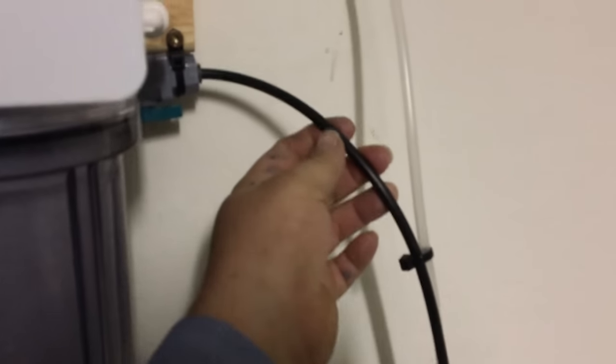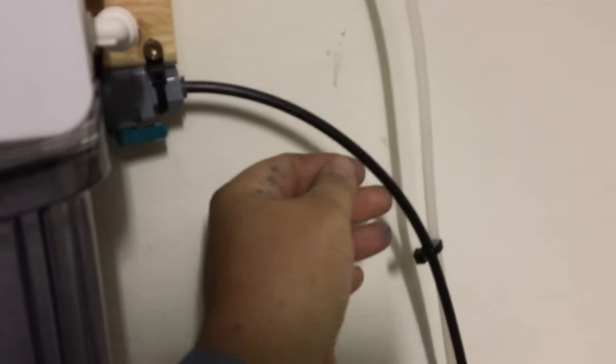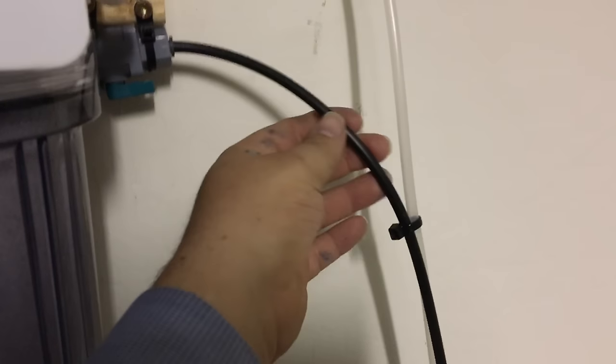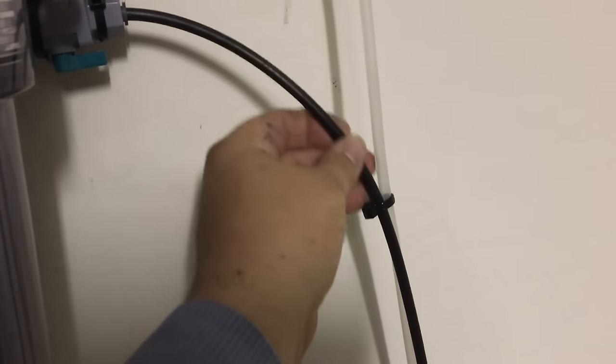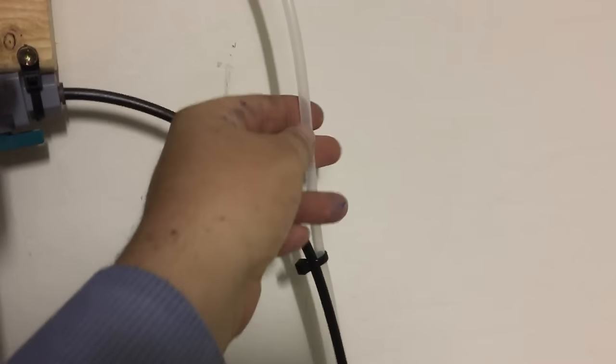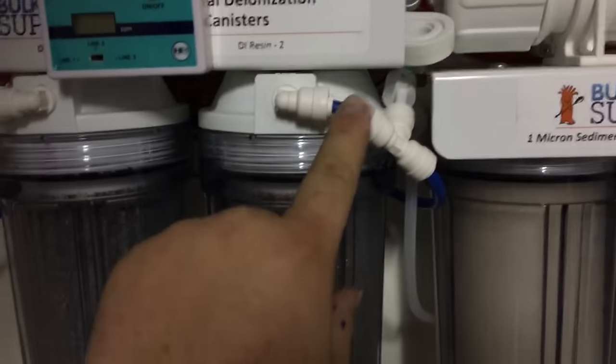If you guys are ever looking to extend your lines that feed the RO or your wastewater, go to Home Depot and get drip system line. I got this in black because I don't have the line buried, it's running down the side of my house and I didn't want algae to build up inside of the clear tubing.